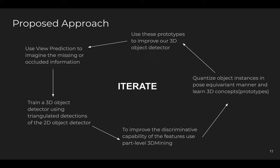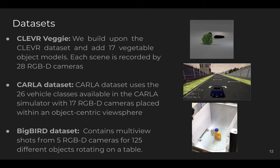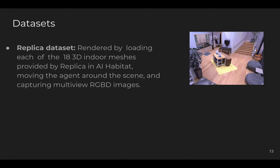The last step is to iterate over the full pipeline: first, use view prediction to train 3D feature maps; then train a 3D object detector using triangulated detections on 2D images; next, improve discriminative capability using metric learning; finally, quantize cropped objects into prototypes and use these to improve our 3D detector. We show results on the CLEVR, CARLA, BigBird, and Replica datasets.